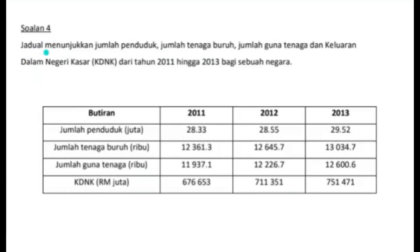Soalan kuantitatif 4. Jumlah penduduk - pelajar kena tengok. Jumlah penduduk belakang sini dia pakai juta. Kemudian kita ada jumlah tenaga buruh. Tengok maklumat yang digunakan, kita pakai ribu. Diikuti dengan jumlah guna tenaga, juga sama dia guna ribu. Dan akhirnya kita ada KDNK di mana unit ukuran dia adalah RM juta. Jadi ini adalah maklumat yang dibekalkan.